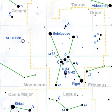Mu Orionis A is an A5V dwarf and metallic line star of effective temperature 8350 Kelvin and apparent magnitude of +4.31. Mu Orionis A has 2.1 solar masses, a radius of 2.9 solar radii, and a luminosity 32 times that of the Sun.